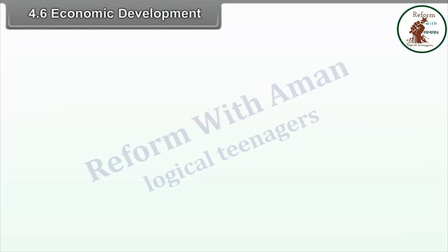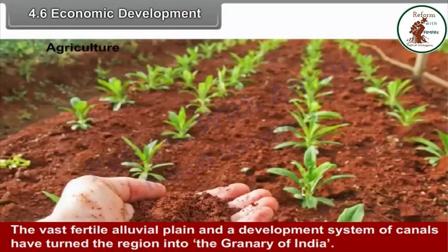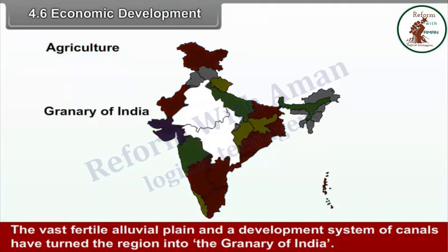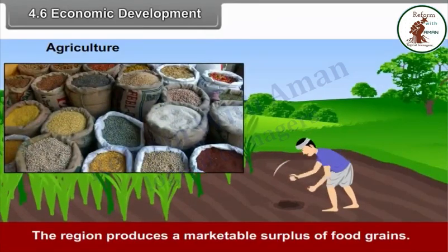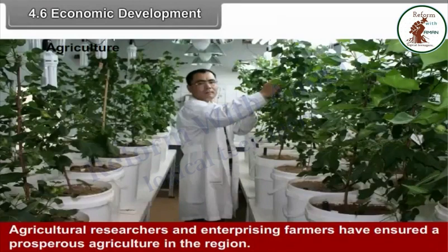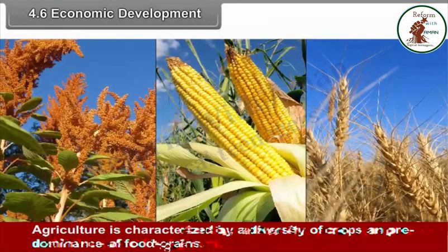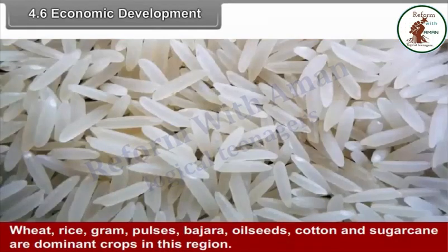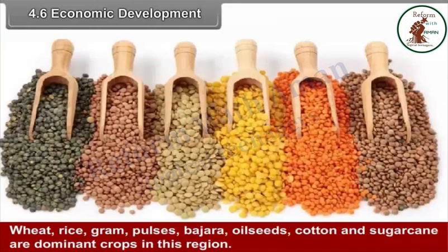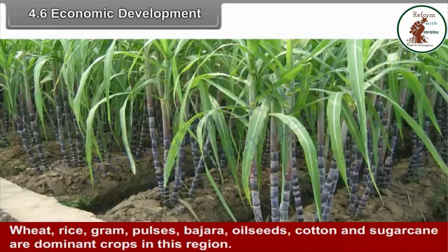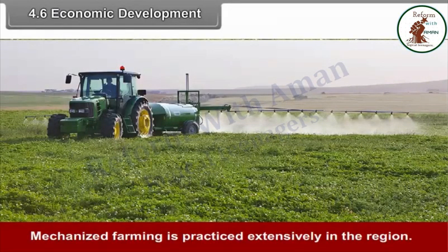4.6 Economic Development - Agriculture. The vast fertile alluvial plain and a developed system of canals have turned the region into the granary of India. The region produces a marketable surplus of food grains. Agricultural researchers and enterprising farmers have ensured prosperous agriculture in the region. Agriculture is characterized by a diversity of crops and predominance of food grains. Wheat, rice, gram, pulses, bajra, oil seeds, cotton and sugar cane are the dominant crops in this region. Mechanized farming is practiced extensively.